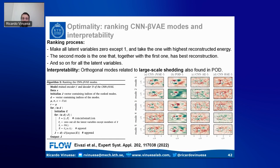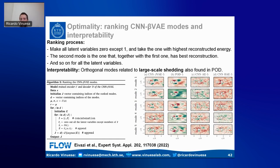The beta-variational autoencoder also allows an optimal representation — modes ranked by their concatenated energy reconstruction — giving a reduced-order model with non-linear modes that are orthogonal and ranked with descending contribution. This is a promising approach to build very compact reduced-order models for complex flow cases involving control, optimization, and predictions.